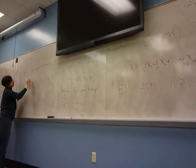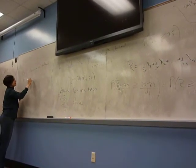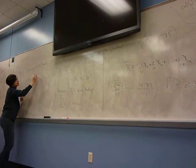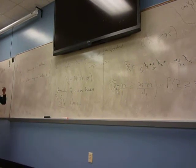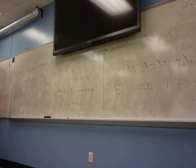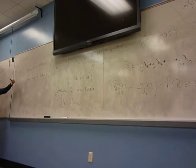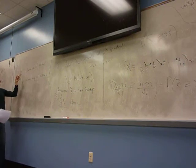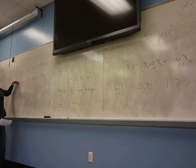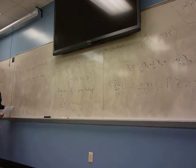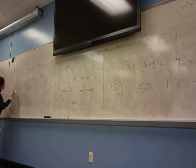Let Y̅ be the class average of section 2. We've assumed that the exam scores of each student are independent. You have different students in class section 1 and section 2, so all the x_i's are independent of the y_i's. Therefore x̄ and ȳ are also independent.